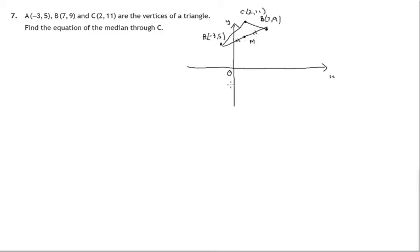So we'll really need to find the coordinates of that point. Let M be the midpoint of A, B. Then M will be, so we take the average of the x coordinates, the mean of the two x coordinates, that's negative 3 plus 7 divided by 2, and we take the mean of the two y coordinates, that's 5 plus 9 over 2.